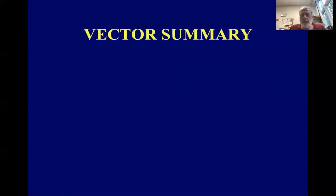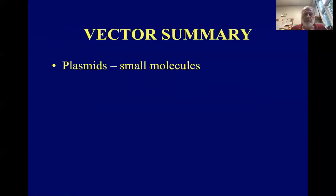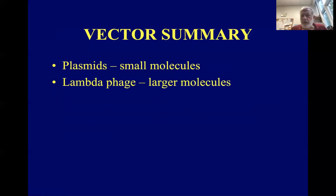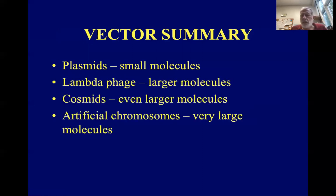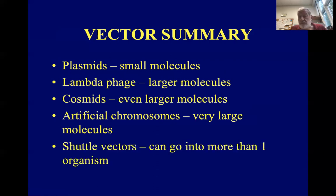To summarize the vectors: plasmids can take small inserts, lambda phage larger ones, cosmids even larger ones, artificial chromosomes take very large inserts, and shuttle vectors can go into more than one organism.